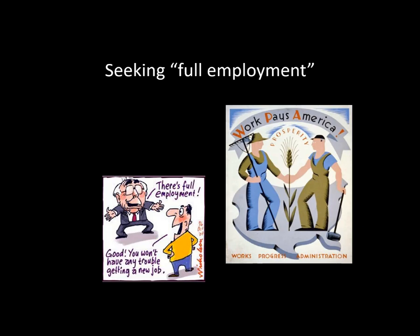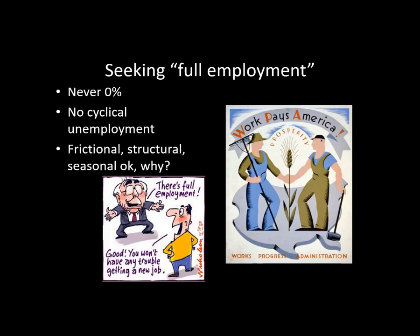We have the term full employment, which does not mean zero percent unemployment. It means there is no cyclical unemployment. Right up until 2020, the U.S. economy was basically at full employment. Then the coronavirus caused many people to lose their jobs, creating cyclical unemployment, so we were no longer at full employment. It's okay to have frictional, structural, and seasonal unemployment — we want people to quit and find new jobs, graduate, or have the economy evolve technologically.